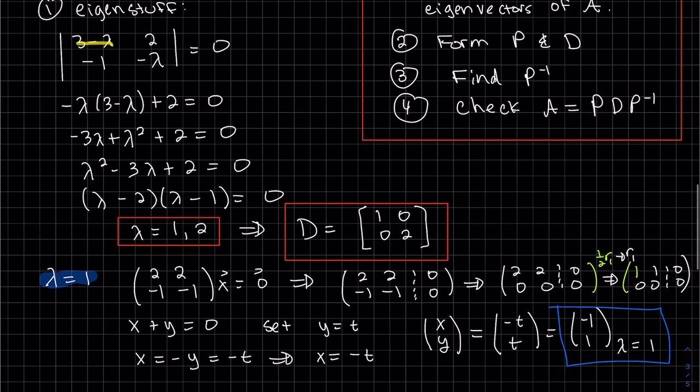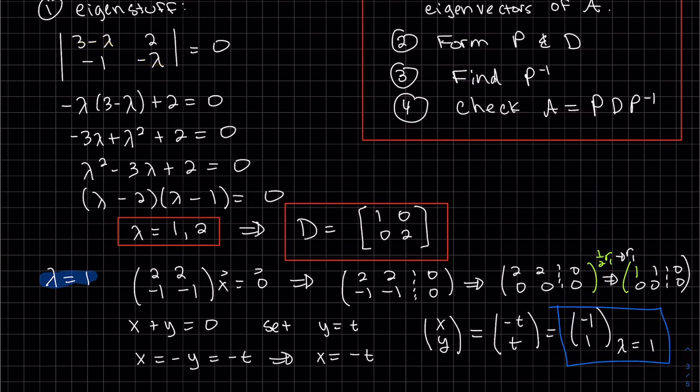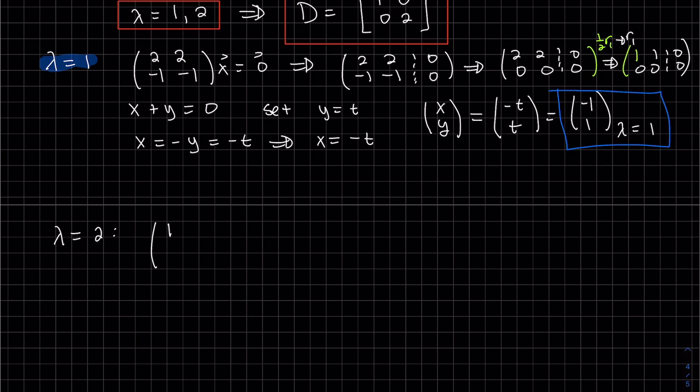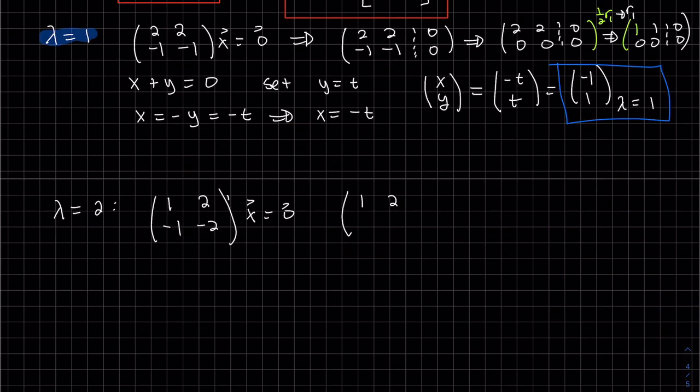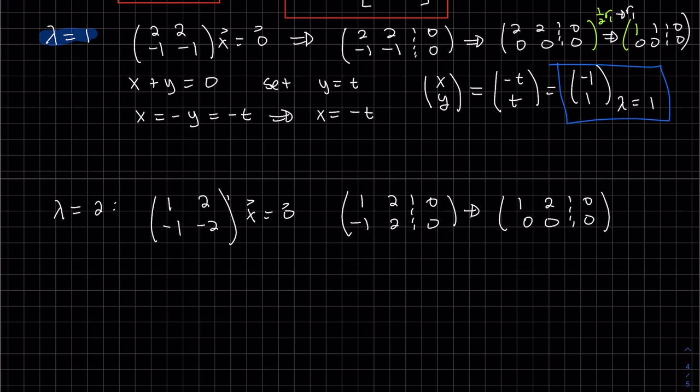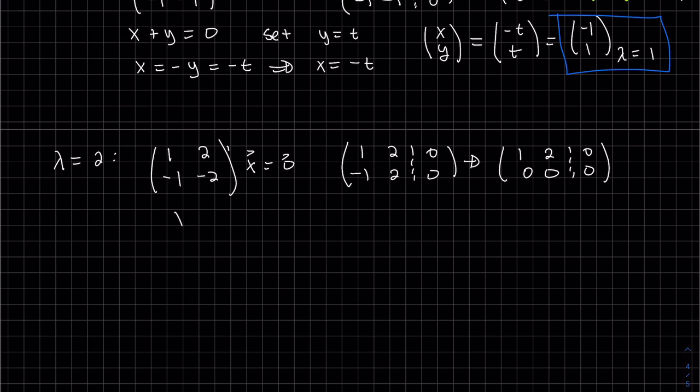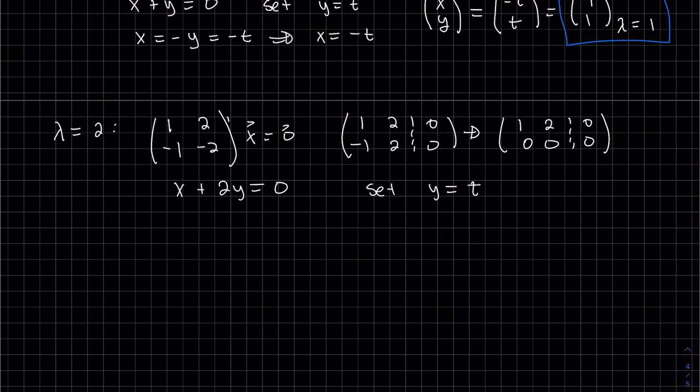And now let's do our second eigenvector. Plugging two into here, three minus two, and I can see these are multiples of each other so the second row will zero out. There's no more reducing so we translate. You can set y equal to t or x equal to t, it doesn't matter.